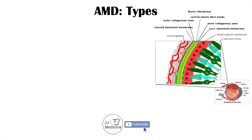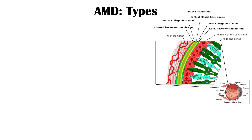Let's talk about the types of AMD and a broad overview of their pathophysiology. Before that, we need to cover some eye anatomy. The back of the eye contains the retina, the light-sensitive layer that translates light into visual images. There are multiple layers, including the choriocapillaris and Bruch's membrane, which contains five layers. Bruch's membrane separates the choriocapillaris from the retinal pigment epithelium and the rods and cones.